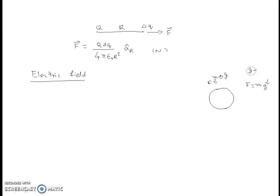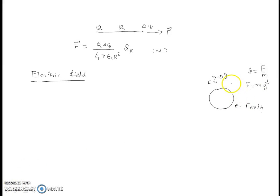G is the force per unit mass, where the mass is assumed to be very very small. So G is given by force per unit mass M, acting on a body of mass M placed at that point.